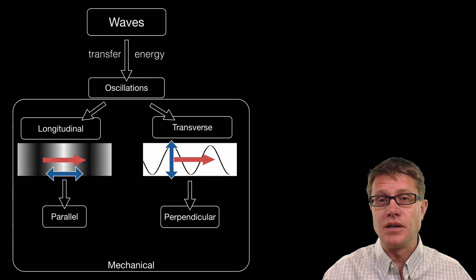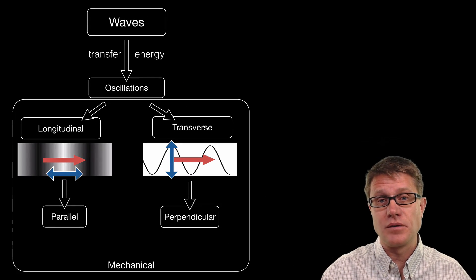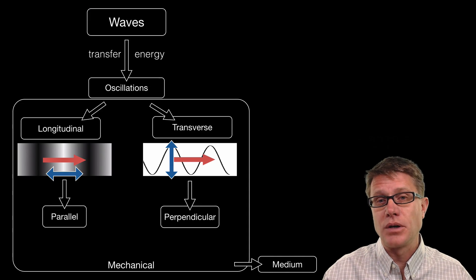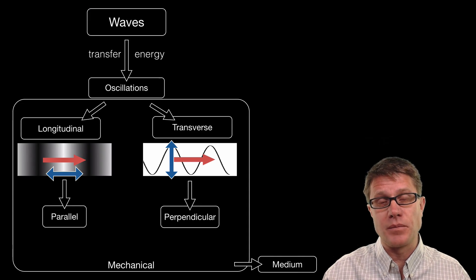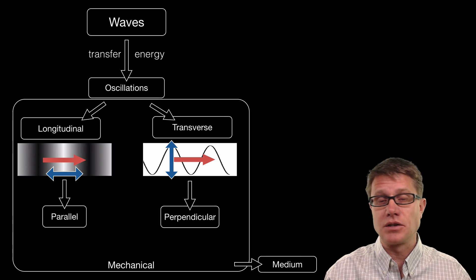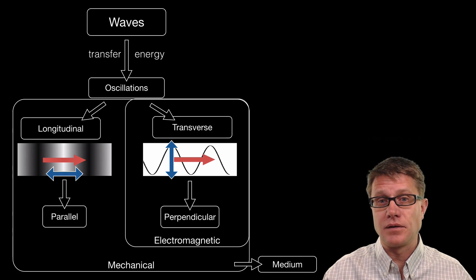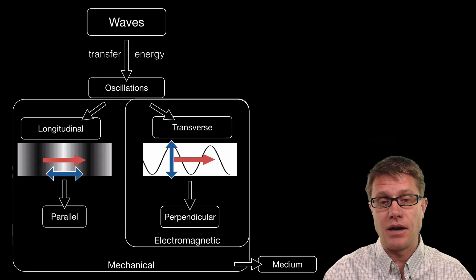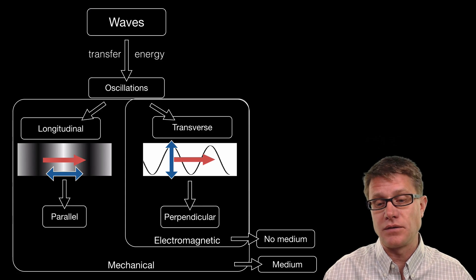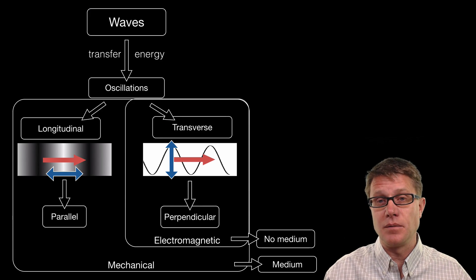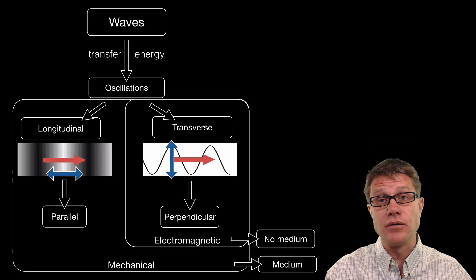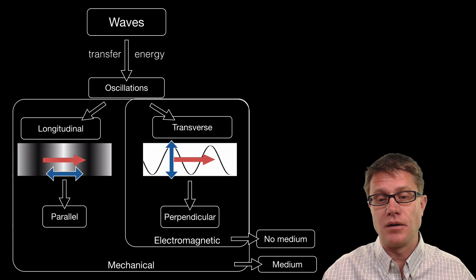And so all of these can be mechanical waves. Mechanical waves, like the seismic waves in the earth, require a medium. They require something to go through. And they could be longitudinal or transverse. However, electromagnetic waves, like the light that you are receiving right now, is only formed in transverse waves. It does not require a medium for it to move through. It can move through a medium like right now it is moving through the air inside your room.